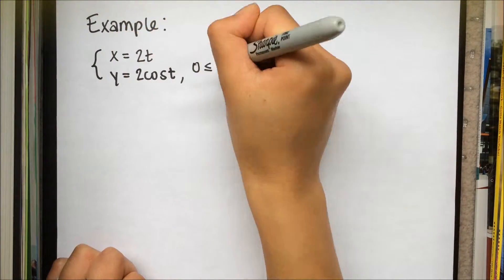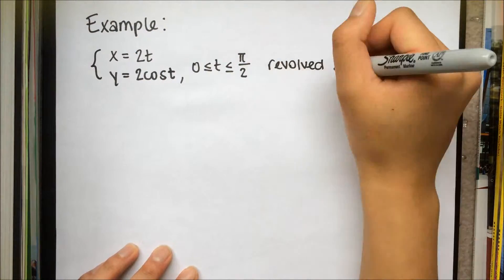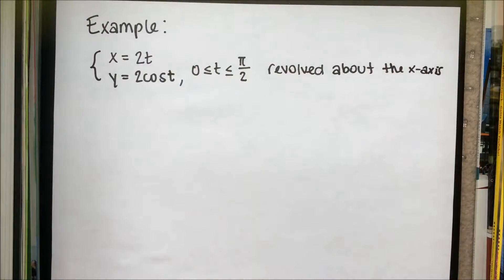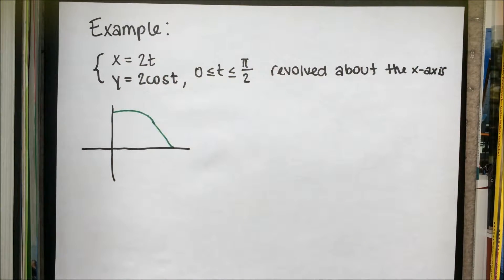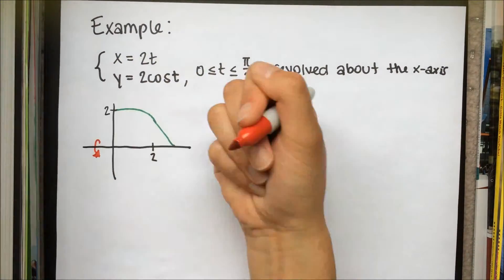Now let's do an example. We will calculate the surface area of the parametric equation x equals 2t, y equals 2 cos t revolved around the x-axis on the domain t is greater than or equal to 0 and less than or equal to pi over 2.